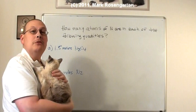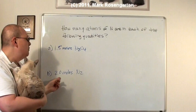So the question is, how many atoms of nitrogen are in each of the following quantities? 1.5 moles of N2O4 and 2.0 moles of N2.